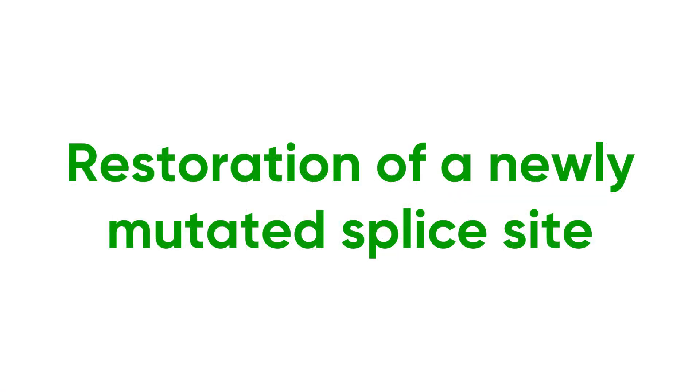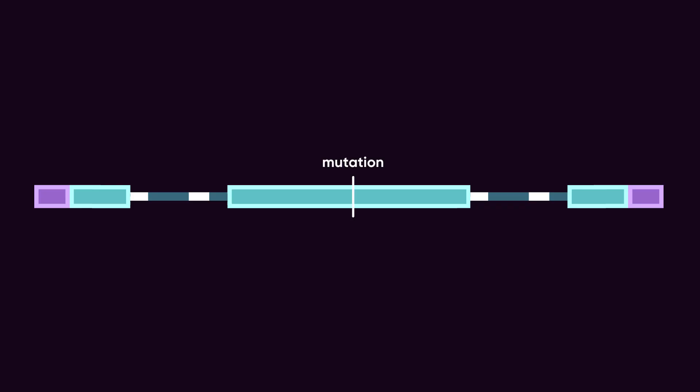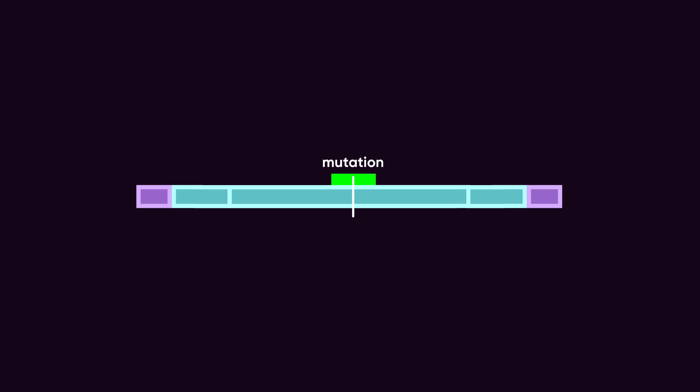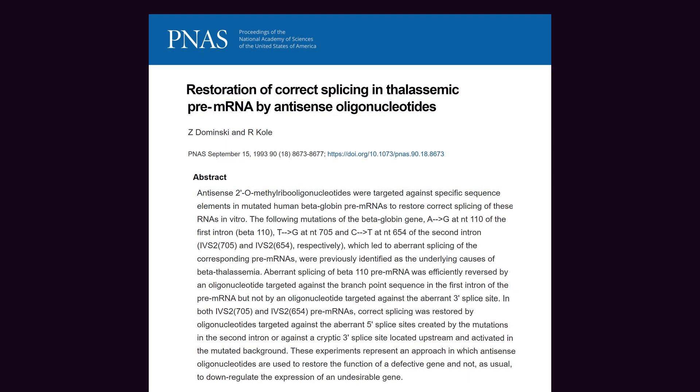Restoration of a newly mutated splice site. If a mutation has created a new splice site resulting in unwanted isoforms, simply cover the mutant splice site with a morpholino to restore healthy function. With the new mutant site blocked, splicing may return to the site used by the wild-type pre-mRNA. This technique was first demonstrated in early splice modification work with mutations causing beta-thalassemia.